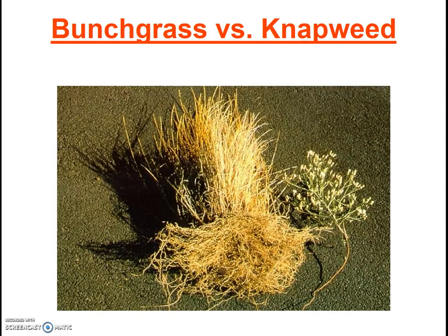Next, consider this native bunchgrass versus a knapweed that has invaded the Pacific Northwest. Compare the roots of the native wheatgrass — it has fibrous, soil-holding roots — compared to the very wispy root of the knapweed, which is unable to help hold the soil together. However, the knapweed, with its longer root, is able in some situations to out-compete the bunchgrass for water.